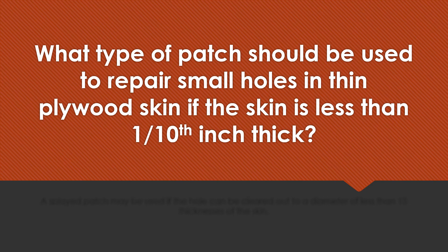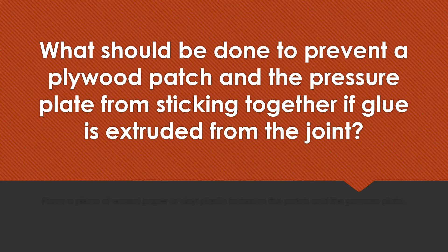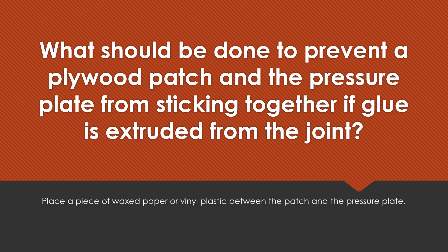What type of patch should be used to repair small holes in a plywood skin if the skin is less than one-tenth of an inch thick? A splayed patch should be used if the hole can be cleared out to a diameter of less than 15 thicknesses of the skin. What should be done to prevent a plywood patch and the pressure plate from sticking together if glue is extruded from the joint? Place a piece of wax paper or vinyl plastic between the patch and the pressure plate.